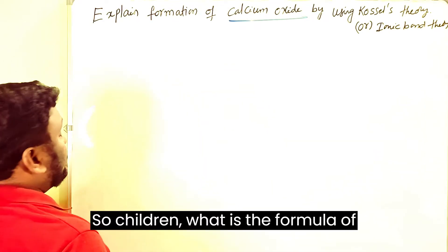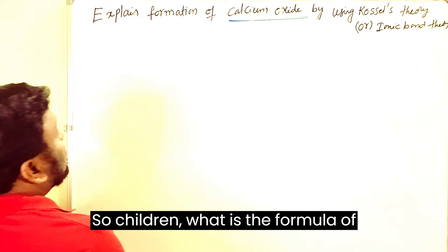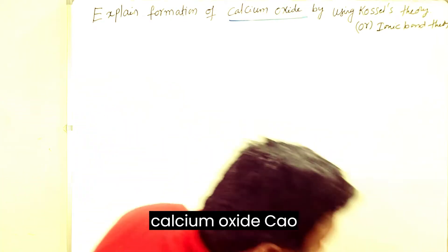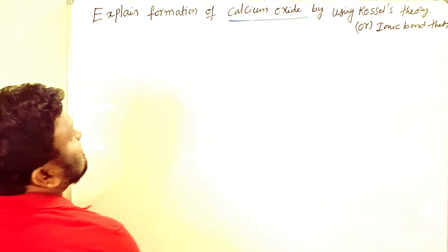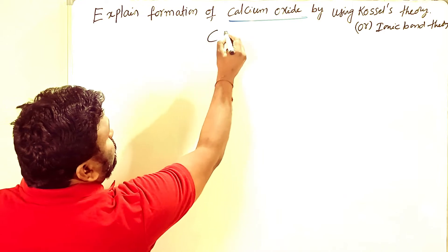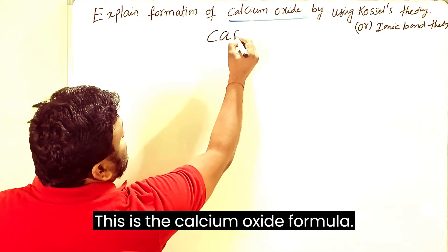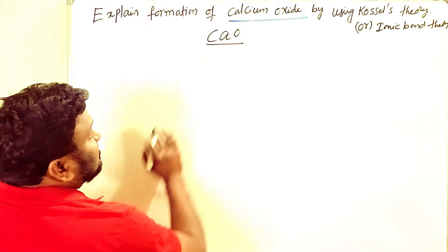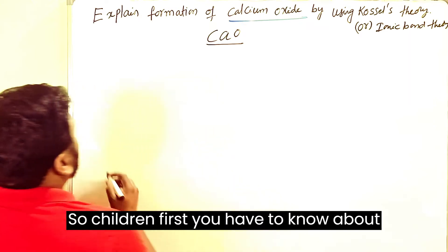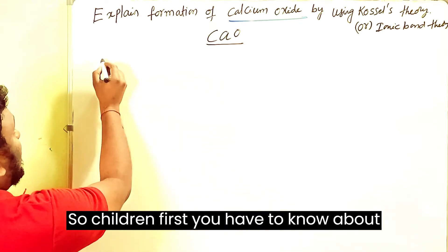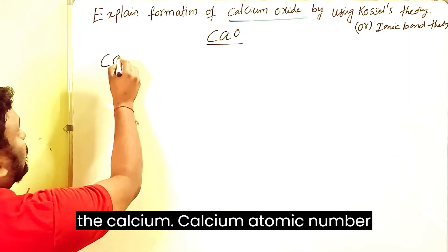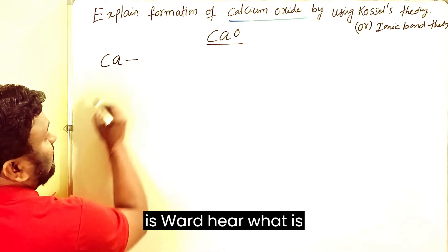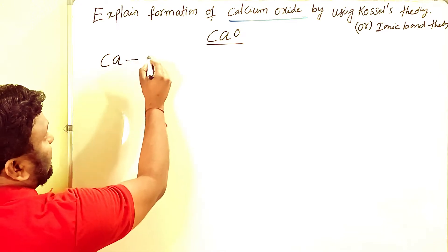The formula of calcium oxide is CaO. First, you need to know about calcium. The atomic number of calcium is 20.